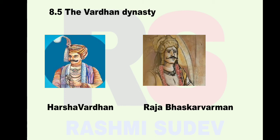8.5 The Vardhan Dynasty: After the Gupta power began to decline, many other states emerged in north India. The Vardhan Dynasty was one of them. Prabhakar Vardhan was the founder of the Vardhan Dynasty, from Thanesar near Delhi. His son Harshavardhan expanded the kingdom from Nepal in the north to the Narmada in the south, from Assam in the east to Gujarat in the west.